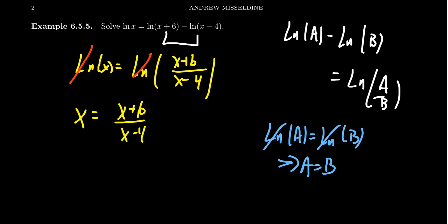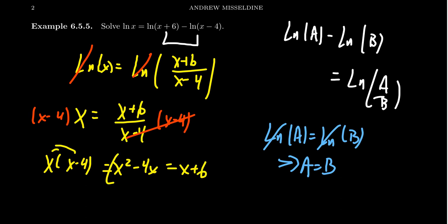Canceling out the logarithms on the left and right sides, we end up with x equals (x+6)/(x-4). We have now a rational equation. I'm going to multiply both sides by the denominator, x minus 4, to clear the denominators on the right-hand side. We then get x times (x-4), which if you distribute the x, you're going to end up with x squared minus 4x. This is then equal to x plus 6.